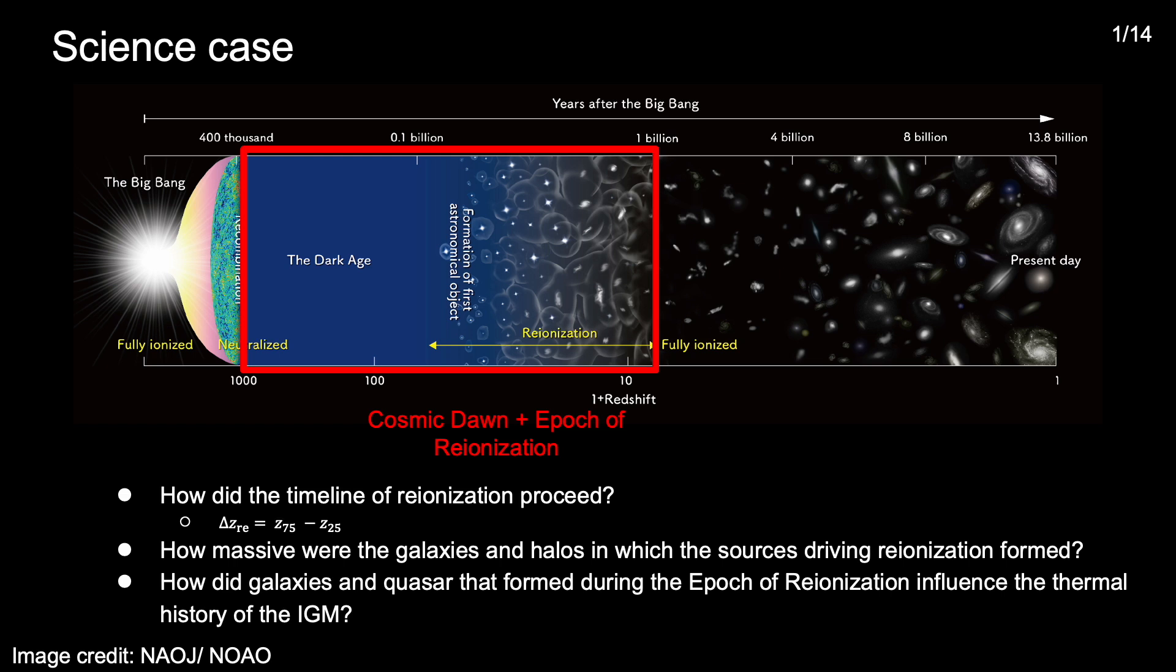Secondly, and related to the first question, how massive were the galaxies and halos in which the sources driving the ionization formed? Were molecular cooling halos or small but numerous atomic cooling halos the largest contributors to ionization, or were larger atomic cooling halos the dominant sources of ionizing photons? And finally, how did galaxies and quasars that formed during the epoch of reionization influence the thermal history of the IGM, which is something that current 21 centimeter cosmology limits can weigh in on?